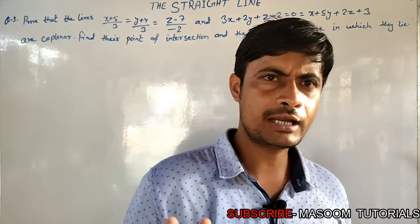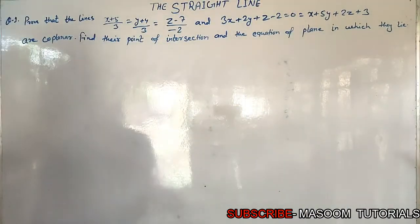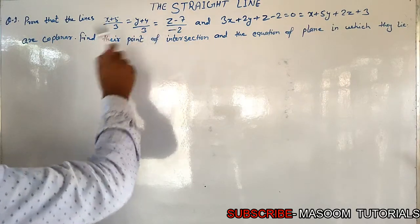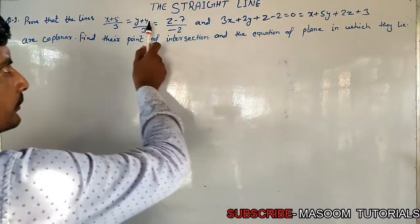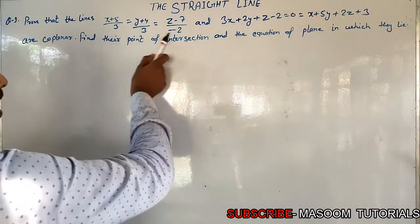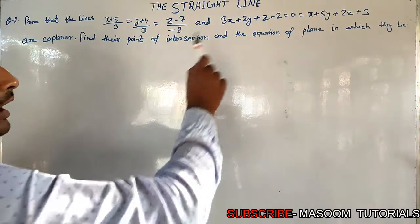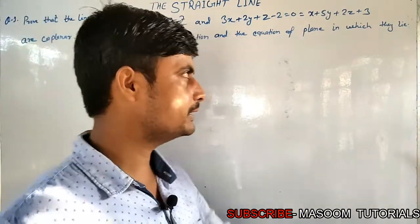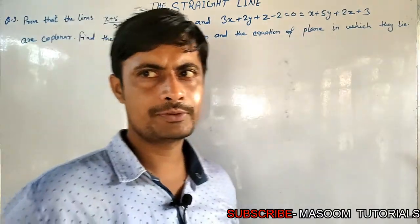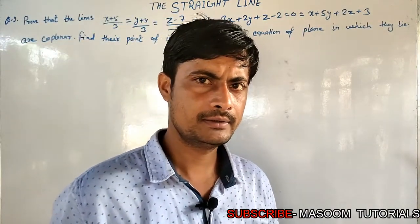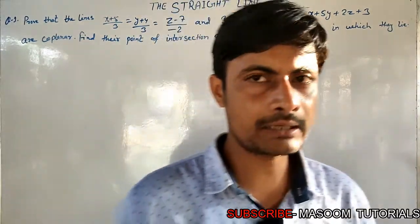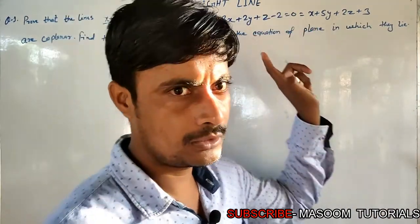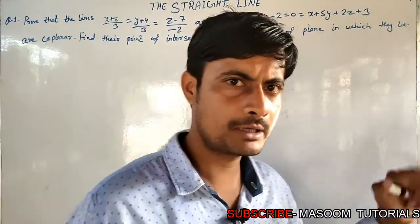We have four things to learn. One thing is that the equation of the straight line is given in standard symmetrical form, but the second equation is in unsymmetrical form. So now we can understand how the unsymmetrical form of a straight line is converted to the symmetrical form of a straight line.